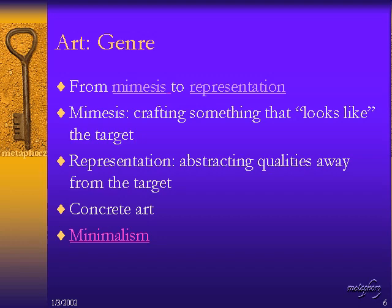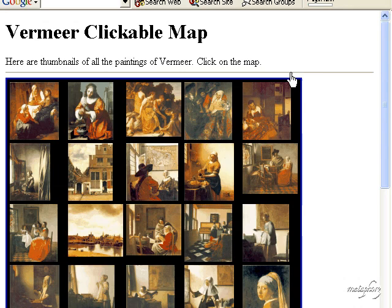As a first step, we need to understand the word 'mimesis' in art and how artists have basically progressed from the beginning of times from what they call mimetic representations to other forms of re-presentation — representing the original subject in a completely different way. Mimesis essentially refers to the idea that something looks like the subject or target you're representing.